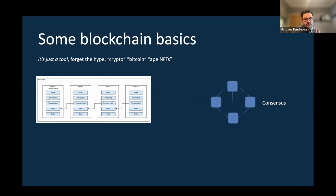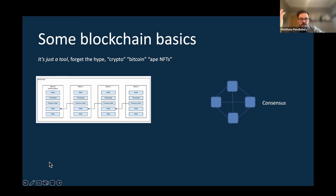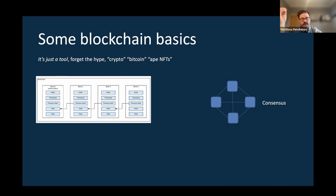Basic principles: you have a number of blocks, each containing the hash of the previous one. As you move forward you have a constant, fairly immutable record — you should be able to detect tampering throughout that history. With a number of nodes each containing a copy, trust is embodied across those nodes, which vote on whether changes are correct. When they all agree, that block is accepted into the master record.